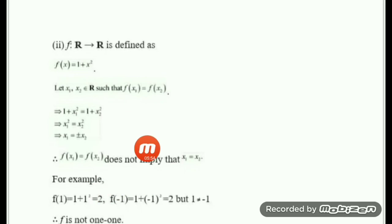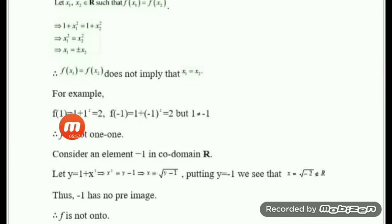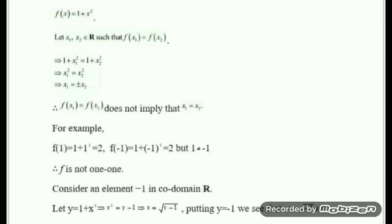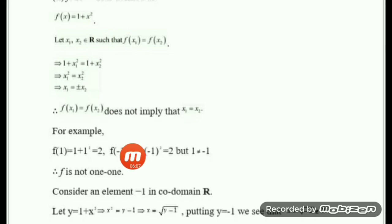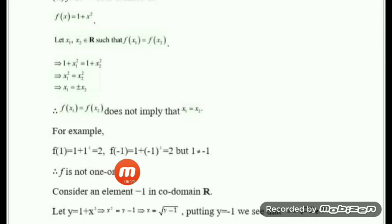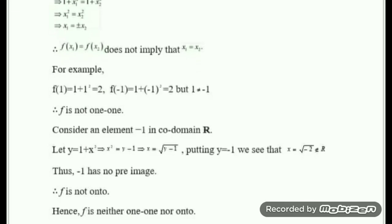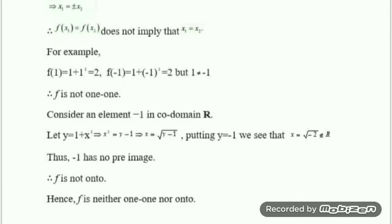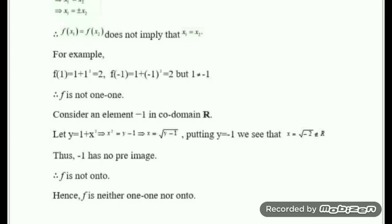We give a counterexample: putting x = 1 gives f(1) = 1 plus 1 squared = 2, and putting x = minus 1 gives f(minus 1) = 1 plus 1 = 2. So both 1 and minus 1 map to 2, meaning two different elements have the same image. Therefore f is not one-to-one. Since it is not one-to-one, f is not bijective.